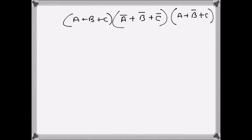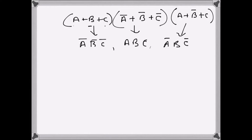A product of sum expression is given, and we need to use a Karnaugh map to find the minimized sum of product expression. From the product of sum expression, the equivalent values in the truth table that are zeros will be: a bar b bar c bar for the term (a plus b plus c), then a b c, and a bar b c bar. These are the terms in the truth table that are zero.